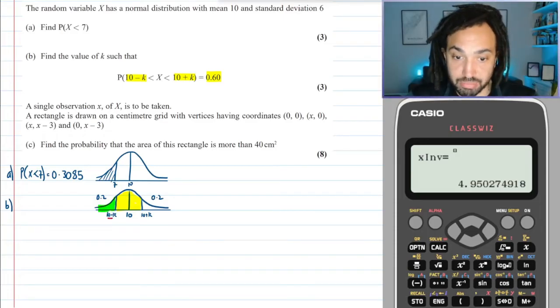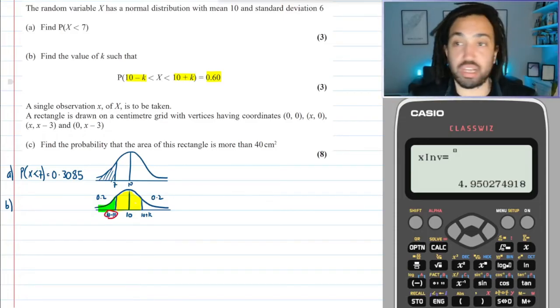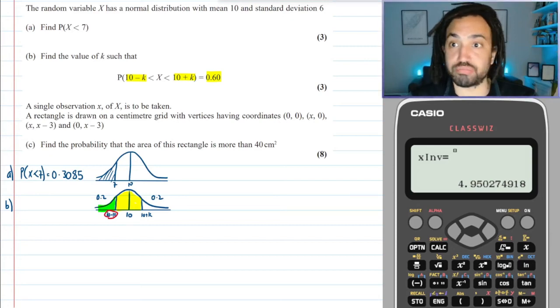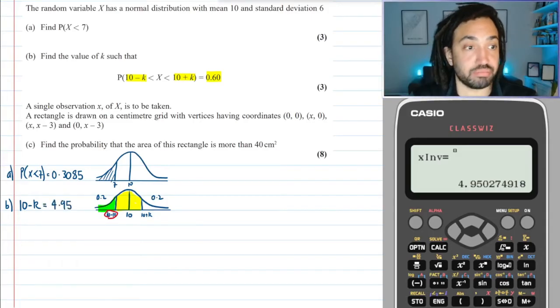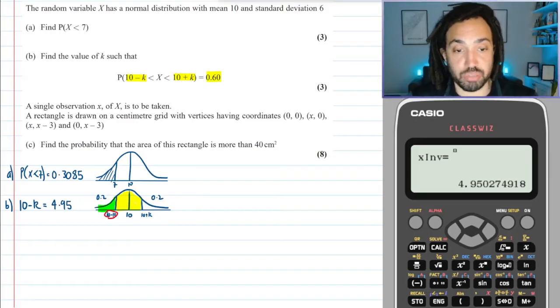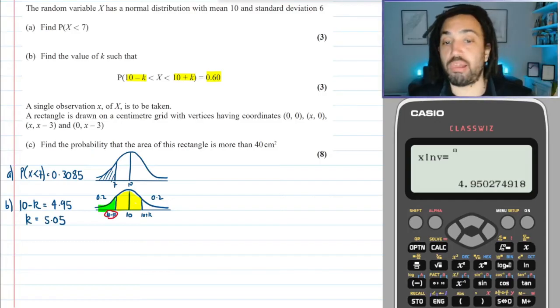So that tells me that this point here has a value of 4.95. So I could say that 10 - k = 4.95, so therefore, doing a bit of rearranging, that means that k = 5.05. Perfect.